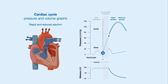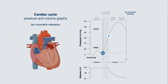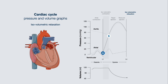Atrial pressures decline and slowly rise as they too start to fill with blood. During isovolumetric relaxation, the ventricular volume stays the same. The ventricular pressures drop below aortic pressures, and the backflow of blood occurs, which allows for perfusion of the heart via coronary arteries. The semilunar aortic valve closes, preventing blood from flowing back into the ventricle. As the blood hits the aortic valve, this causes a slight increase in aortic pressures, producing a dicrotic notch.